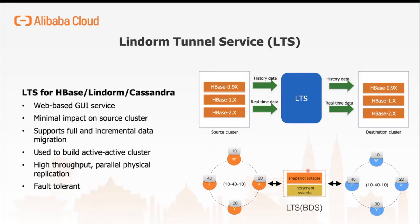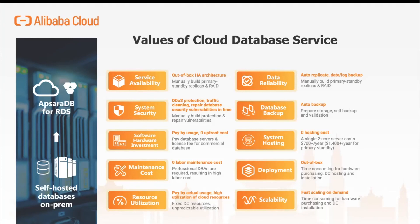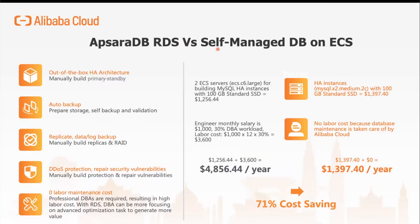When migrating a database to Alibaba Cloud, you can choose to run your own database or use a managed service. The benefits of a cloud database service include built-in service availability, security, and data reliability — no need to worry about HA, backups, or patching. Scalability is easy: adding a read-only node takes just a few clicks. Using RDS gives you out-of-the-box HA, automatic backup, and replication. This reduces DBA toil work significantly. While RDS may appear more expensive, when you factor in the operational costs and hours, you actually save more money overall.